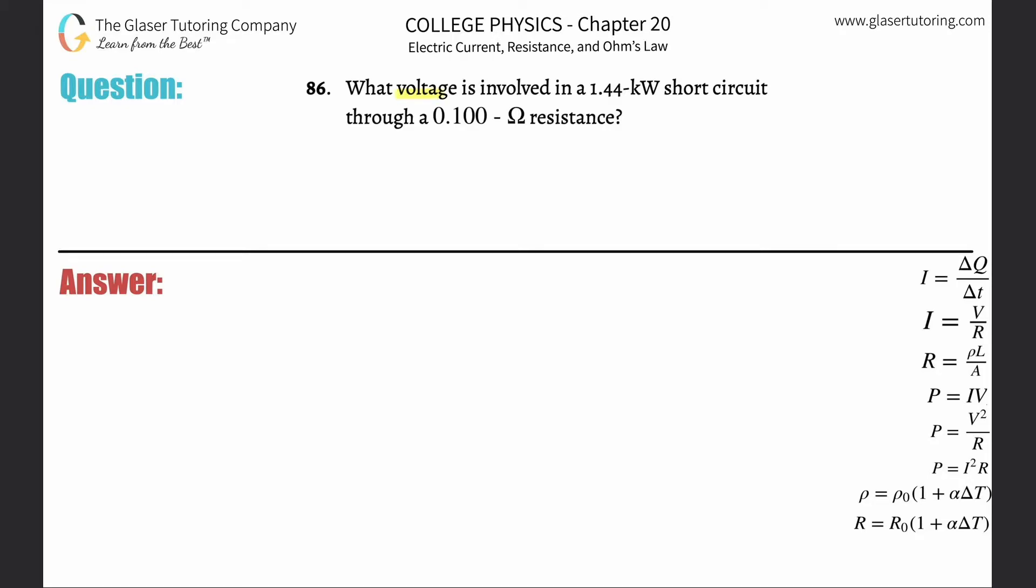Number 86: What voltage is involved in a 1.44 kilowatt short circuit through a 0.1 ohm resistance? The variables we're talking about here are voltage, watts (which is power), and resistance in ohms.